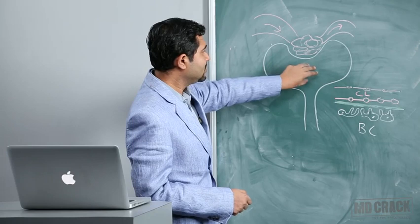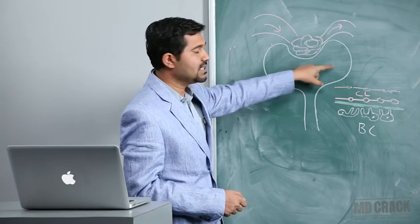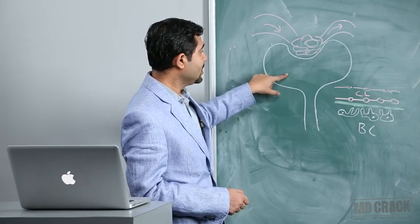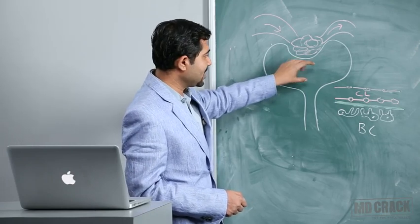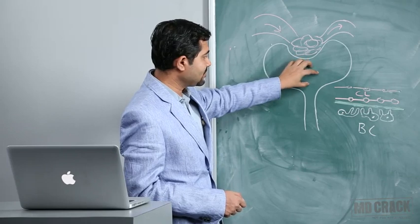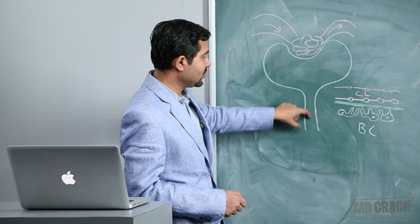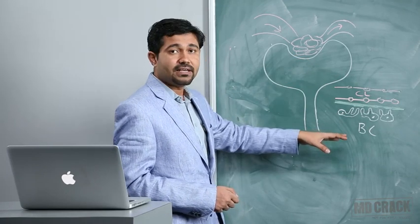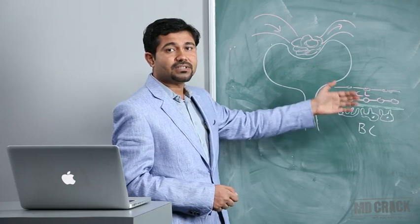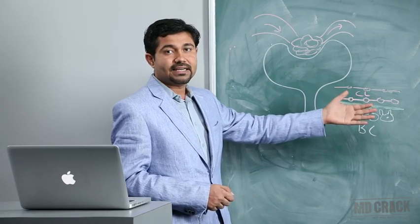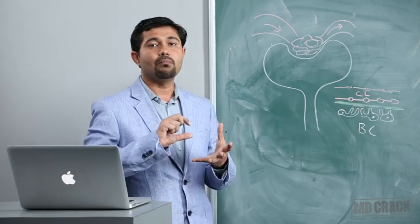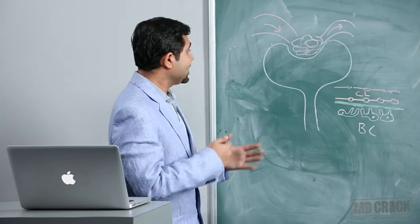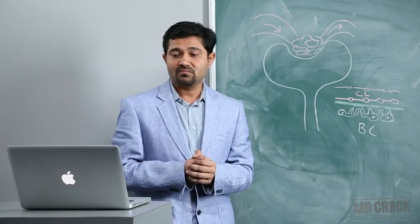This filtrate will pass from the Bowman's capsule, then go to the PCT, DCT, Loop of Henle, and the collecting duct, where the filtrate can be modified. Ultimately, urine will be formed.